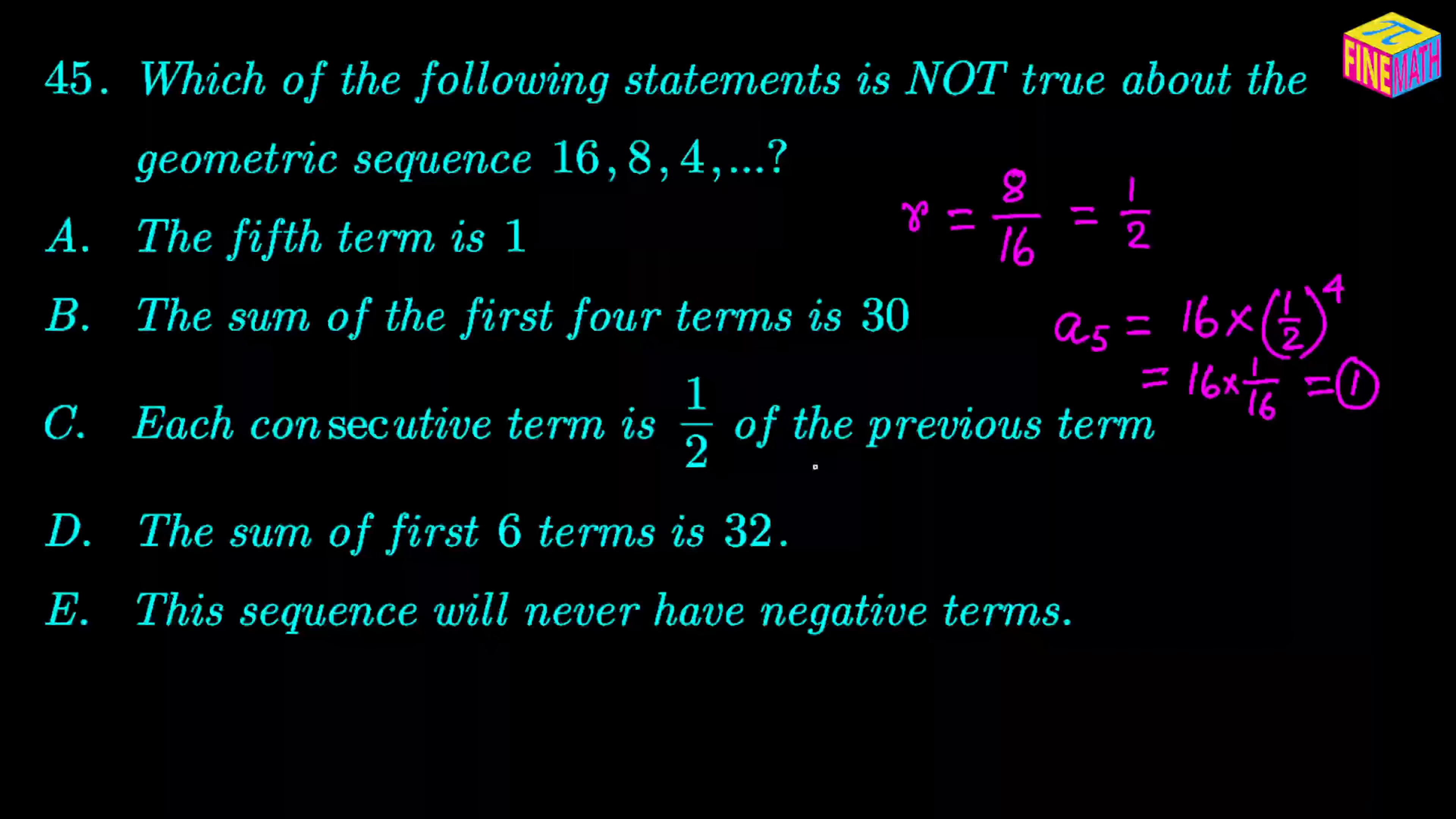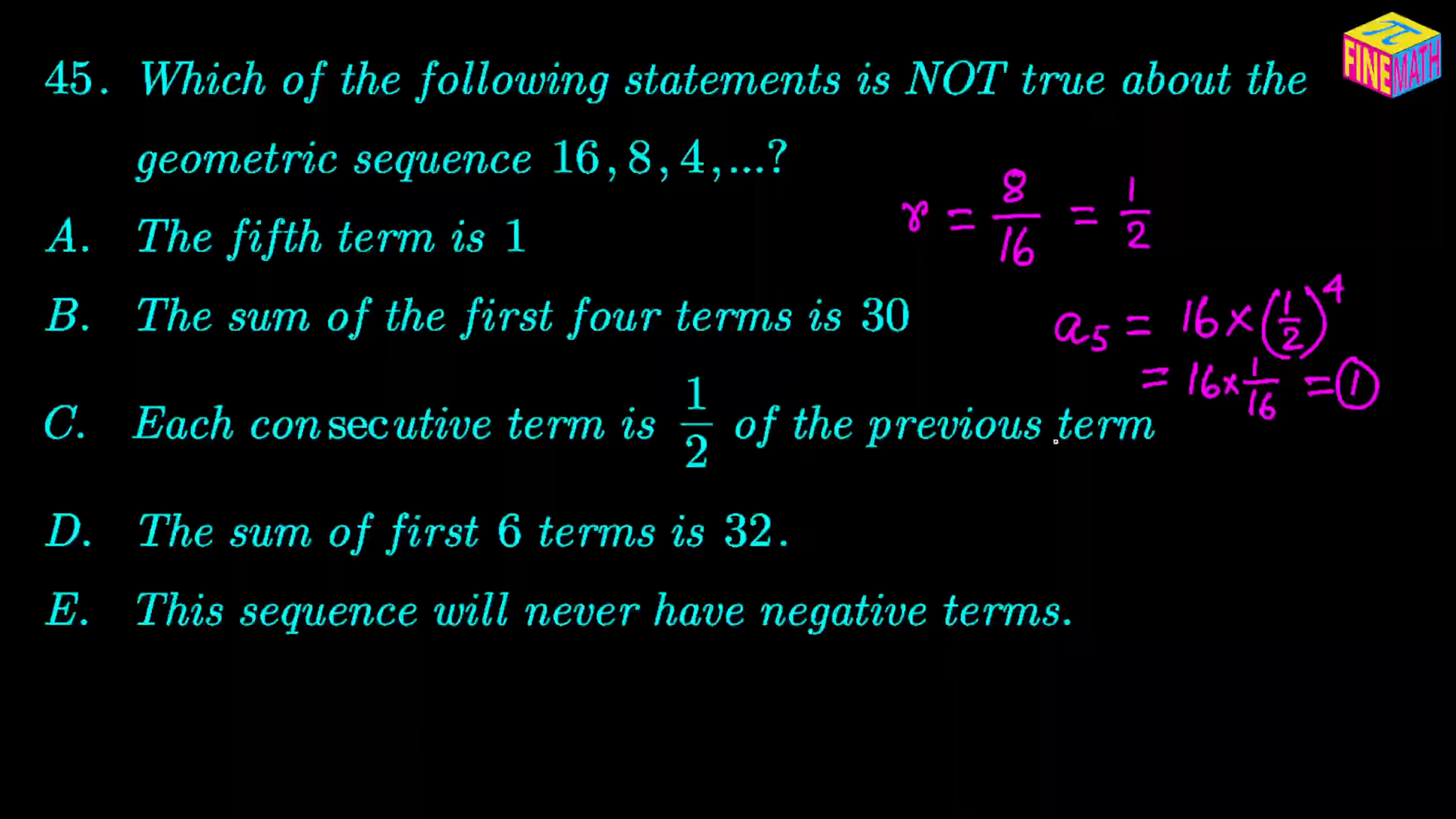Now let's look at the third statement here. Each consecutive term is one half of the previous term, and that is again true, because the common ratio is one half. So each consecutive term is one half times the previous term. So option C is a true statement. That is not the correct answer here.